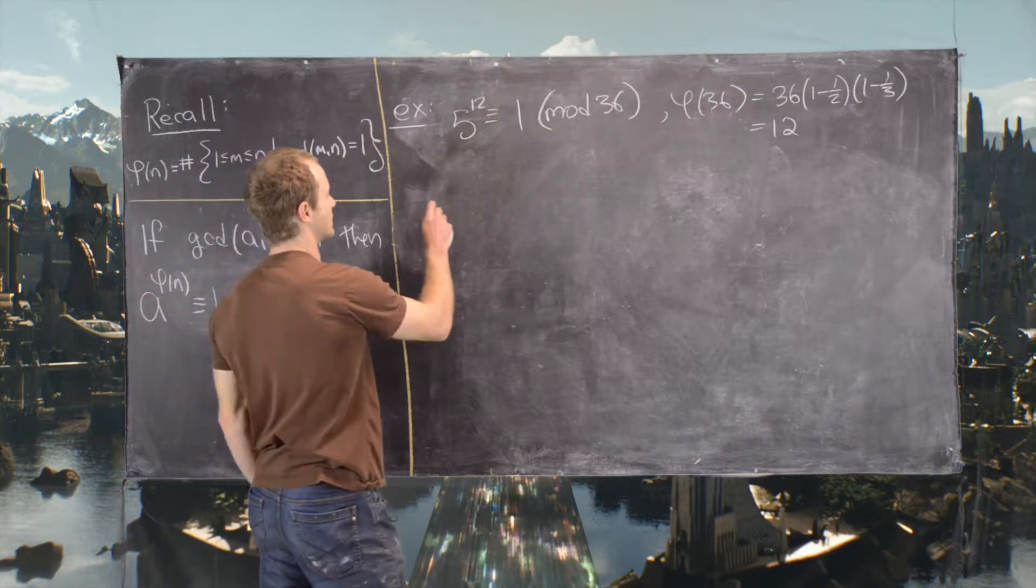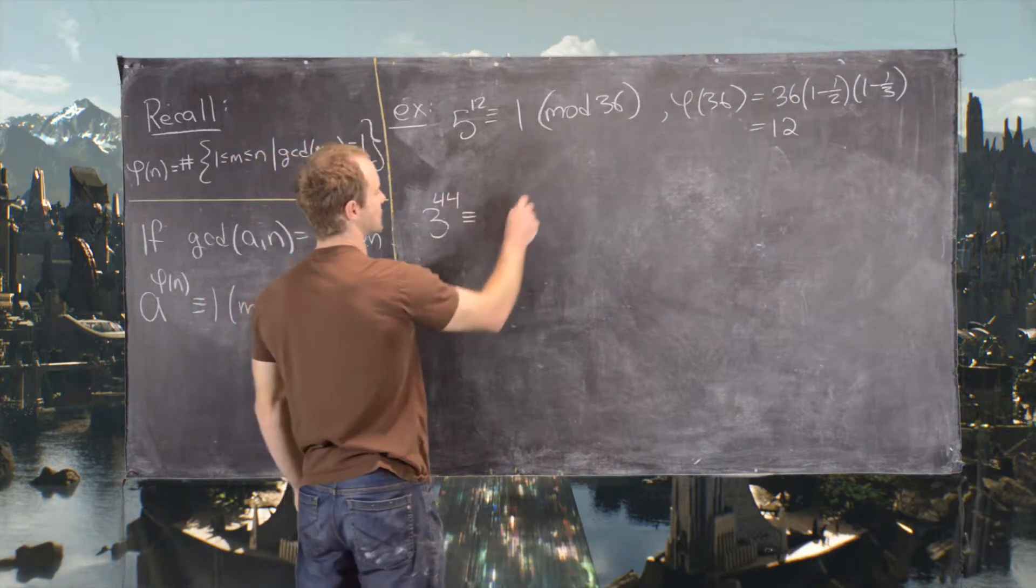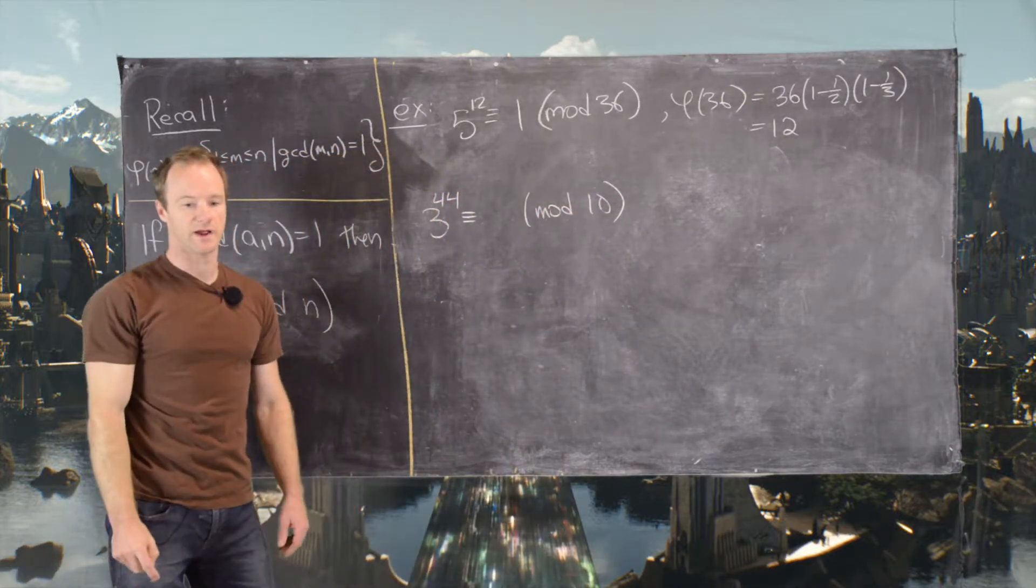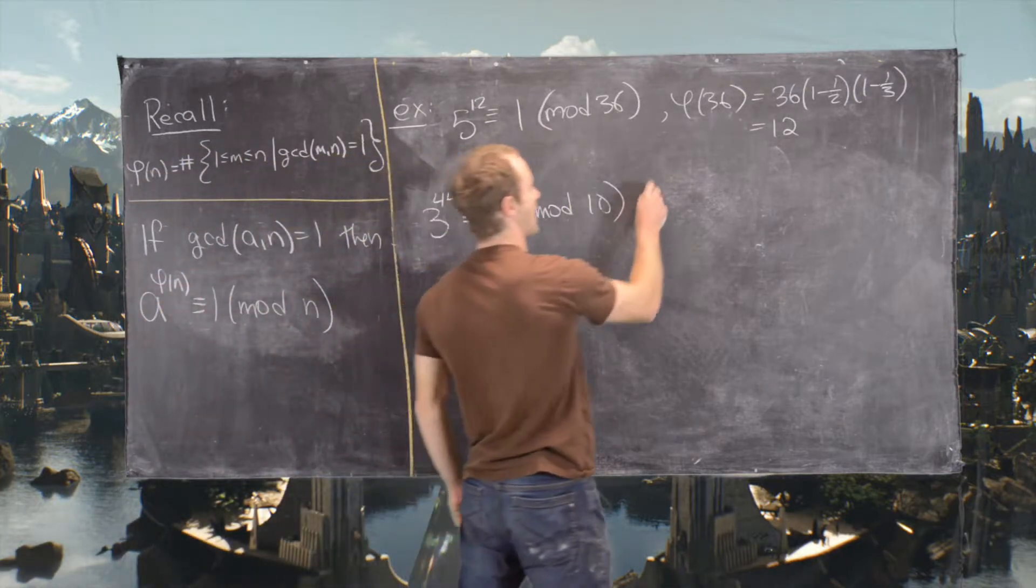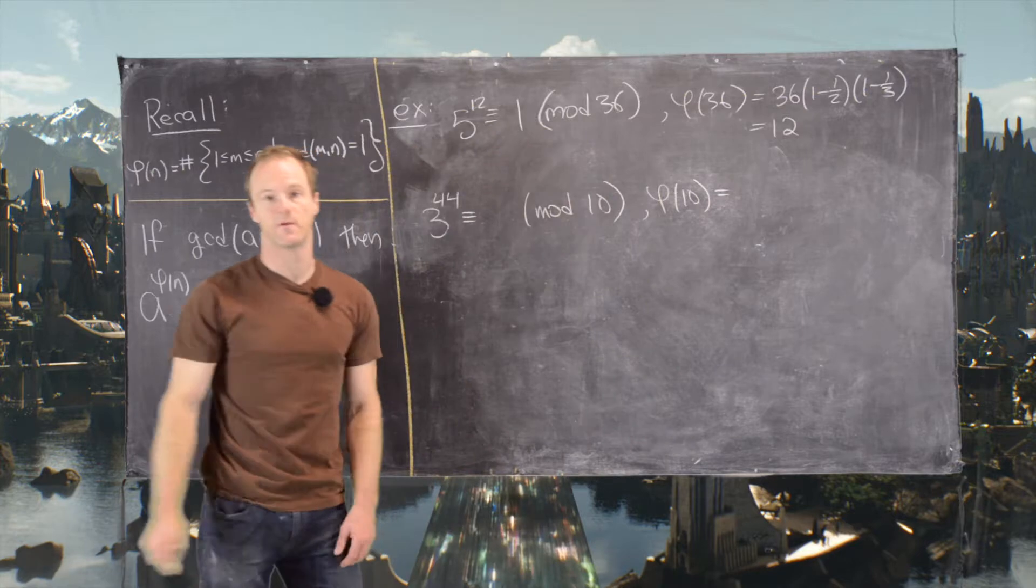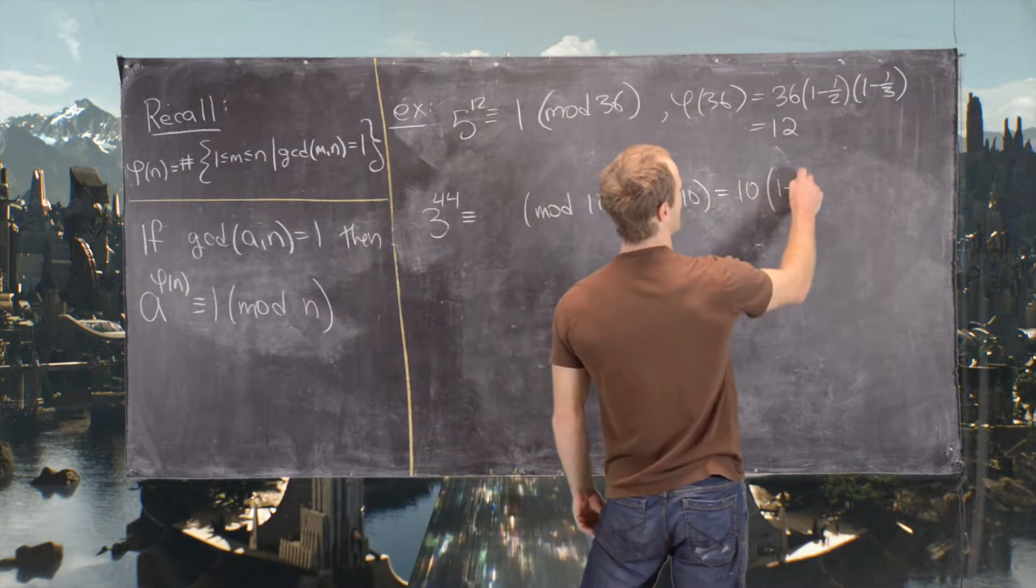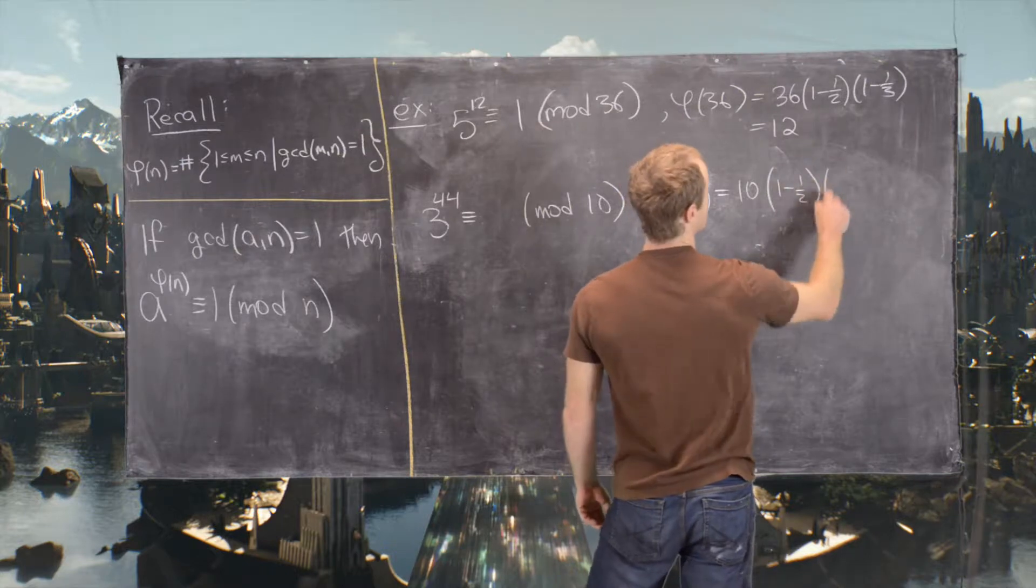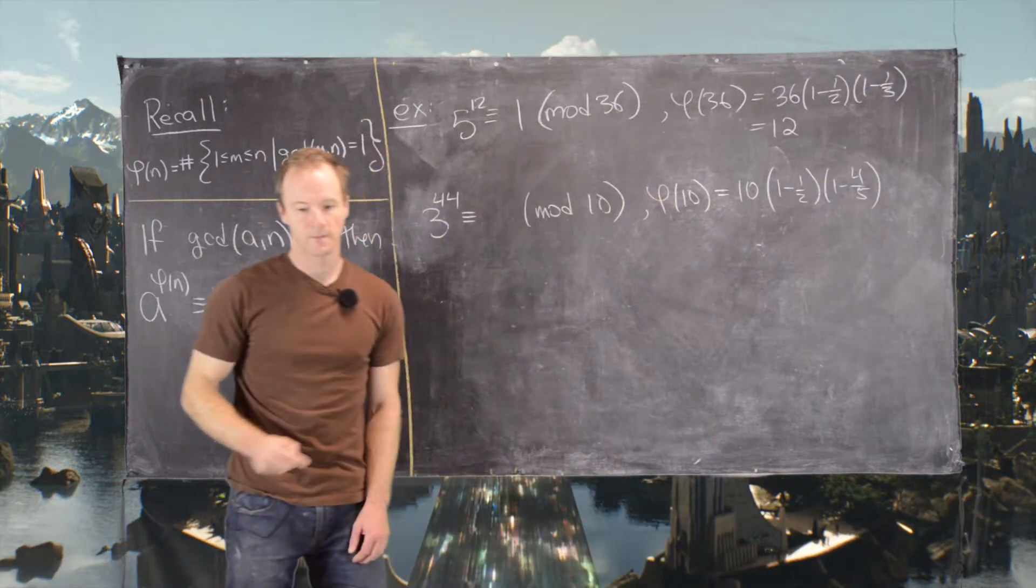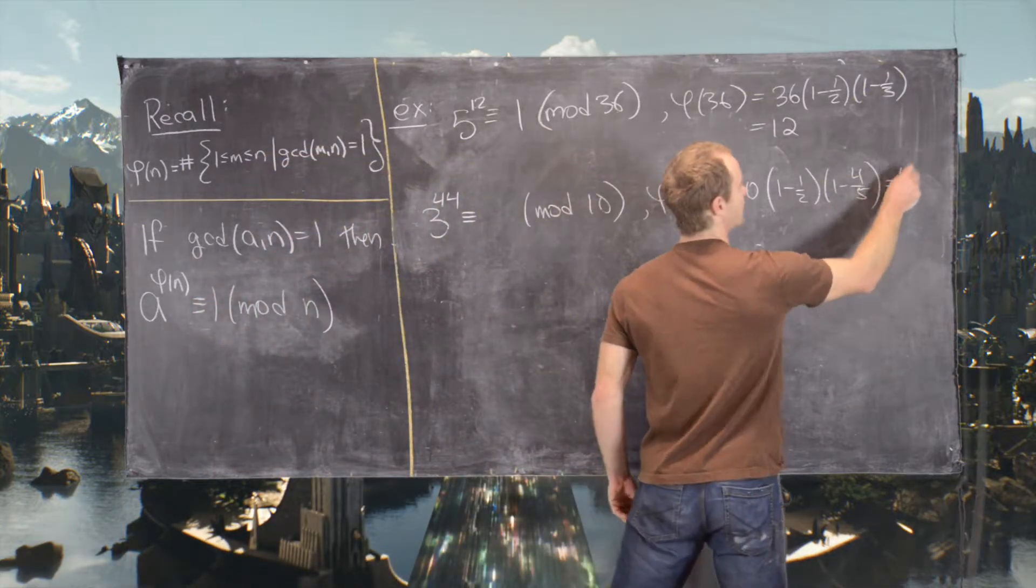Now the next one we want to look at is 3 to the 44 is congruent to something mod 10. Again, we'll probably need to look at phi of 10 and we'll use this same formula. So this will be 10 times 1 minus half times 1 minus fifth. And it's easy to see that this is equal to 4.